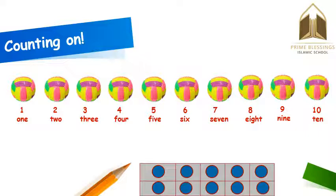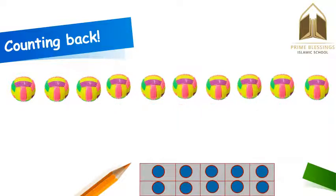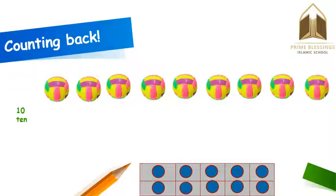There are ten balls on your screen. Now kids, how many balls are you seeing right now? Yes, there are ten balls on your screen. If I take away one ball from here, now how many balls are you left with? You are left with only nine balls.